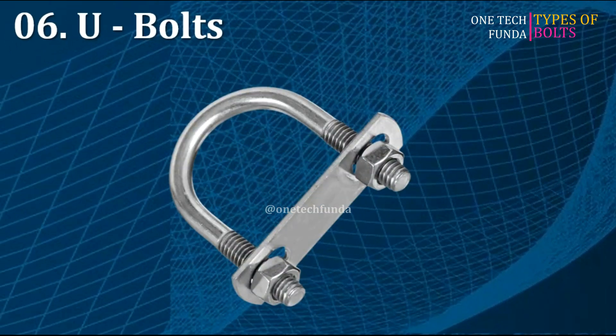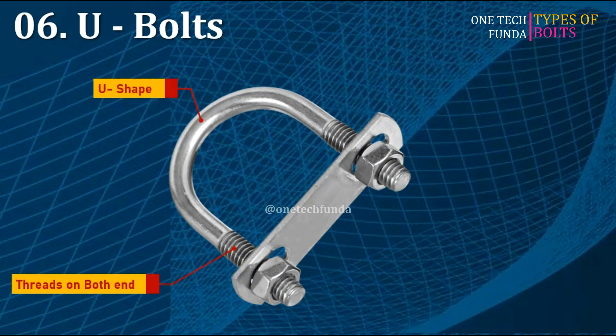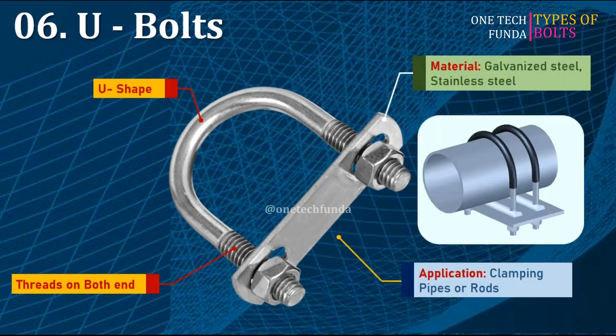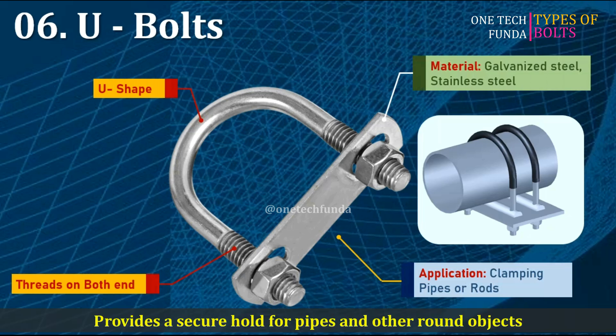U-bolts are shaped like the letter U with threads on both ends, used for clamping pipes or rods. Materials include stainless steel and galvanized steel. The main advantage is they provide a secure hold for pipes and other round objects.